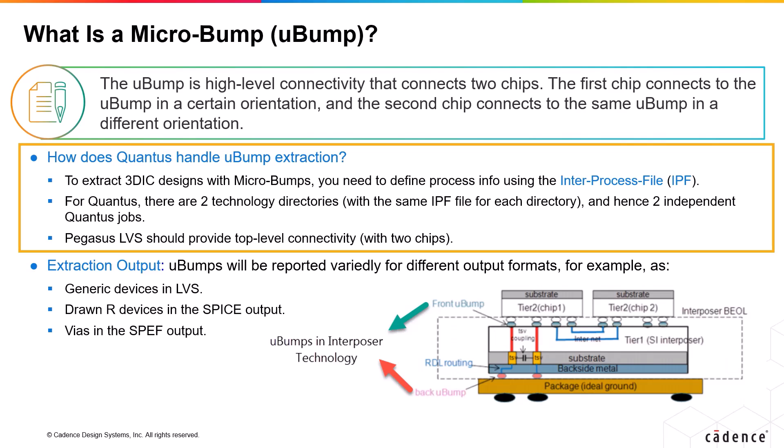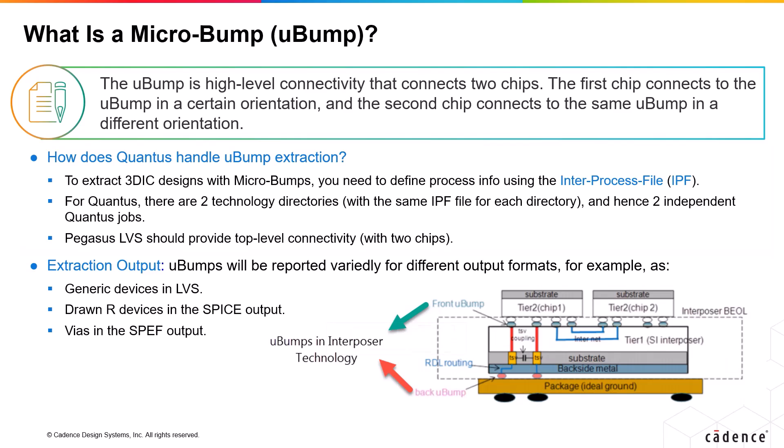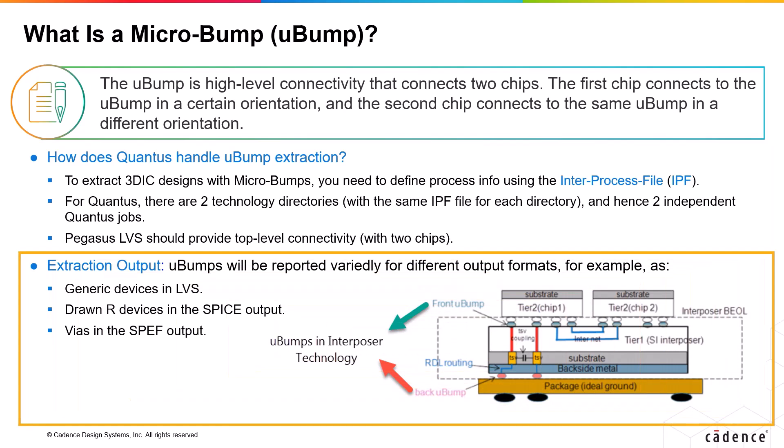Hence, there are going to be two independent Quantus jobs as well. The top-level connectivity with two chips should be provided by the PVS LVS flow. Here is a block diagram wherein we have different micro bumps used in the interposer technology — the front micro bump and the back micro bump. The back micro bump connects the package to the backside metal, whereas the front micro bump connects the interposer to tier one chip and tier two chip.